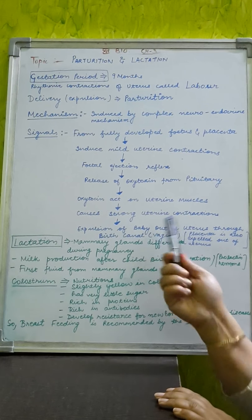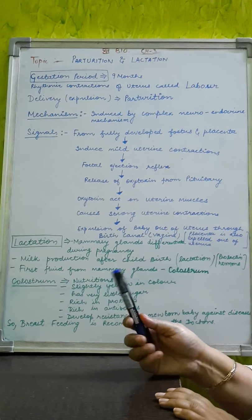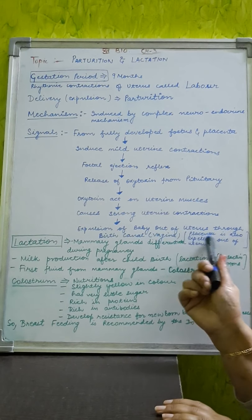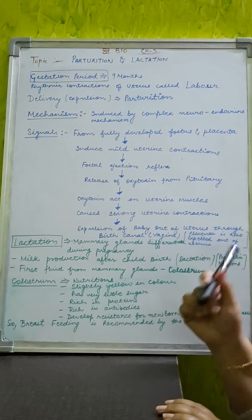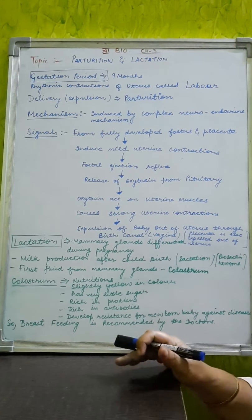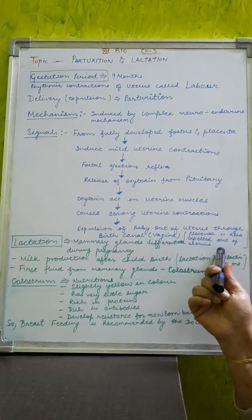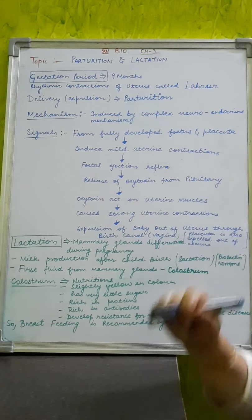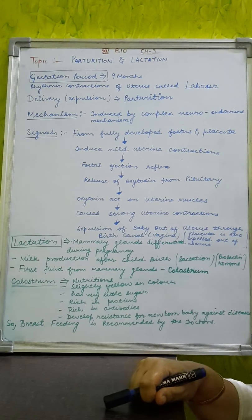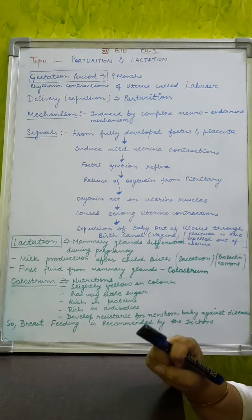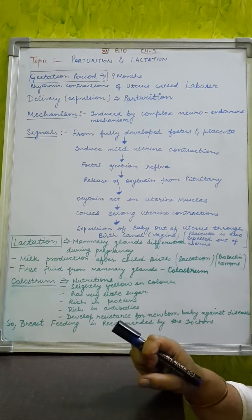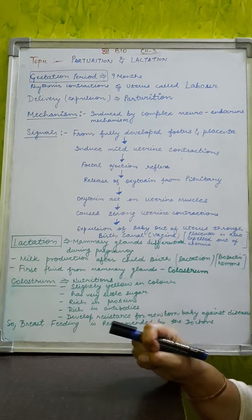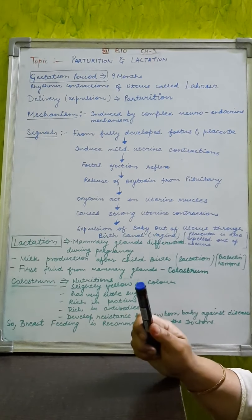So vagina helps in the delivery of the baby. As soon as the baby is delivered, after that placenta is also expelled out of the uterus and it is also in some care books written as after birth. So it is under the neuroendocrine control mechanism, number two, fully developed fetal signals induce uterine contractions, and oxytocin hormone controls strong muscular contractions that will help in the delivery or parturition of the baby.